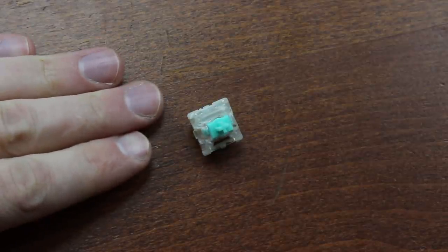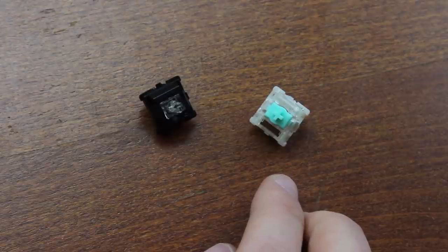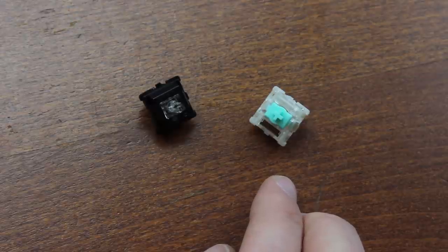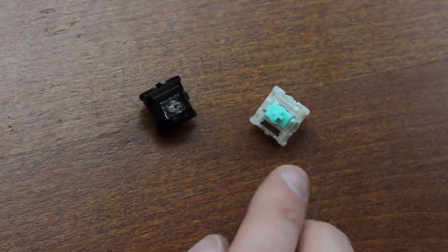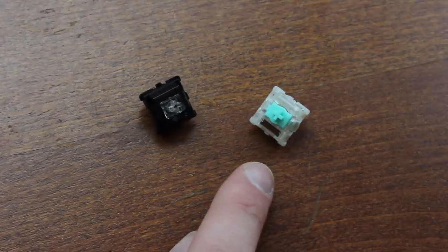The Lekker switch is Hall effect based, which means that it uses magnets to create a transverse voltage across an electrical circuit which is subsequently measured and used as an indication for how far the key is pressed down. And yes, that means that these switches are analog capable.